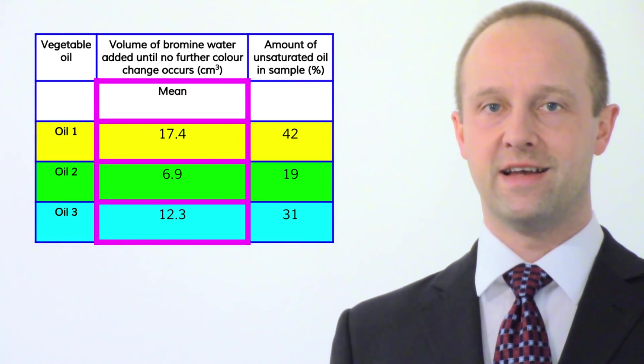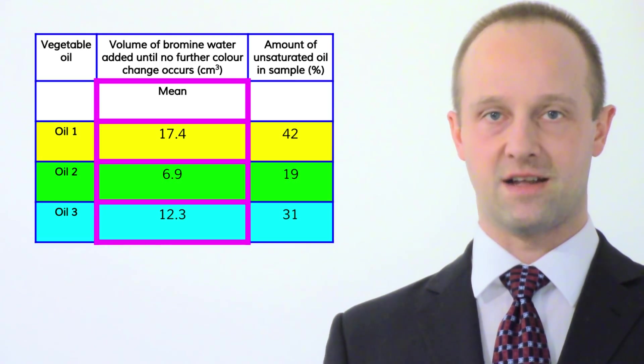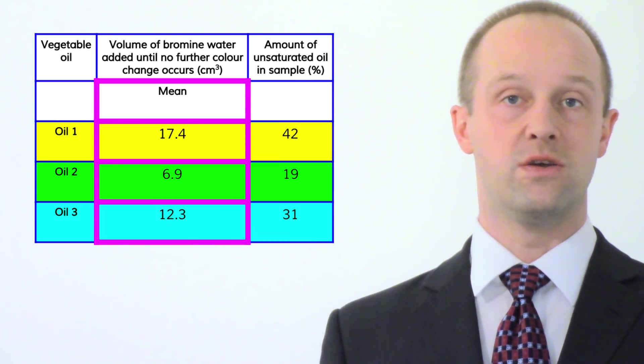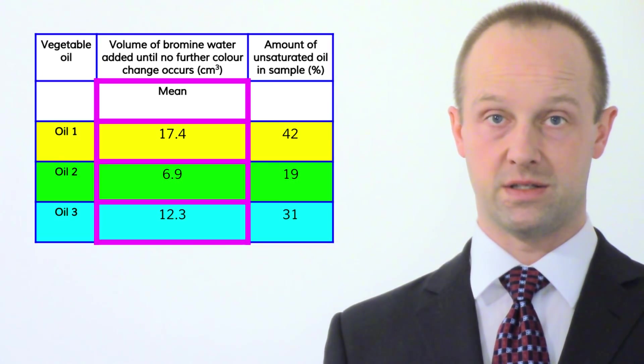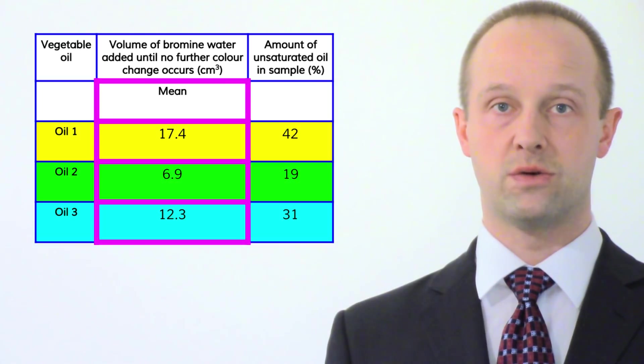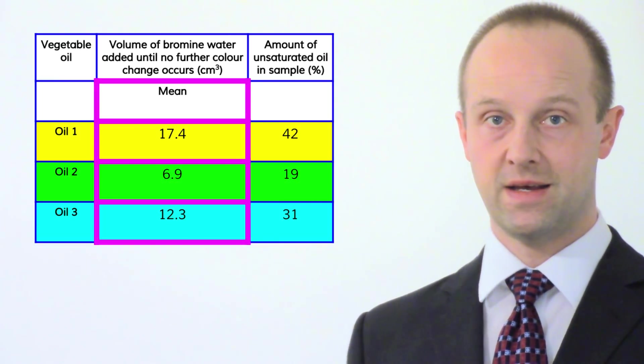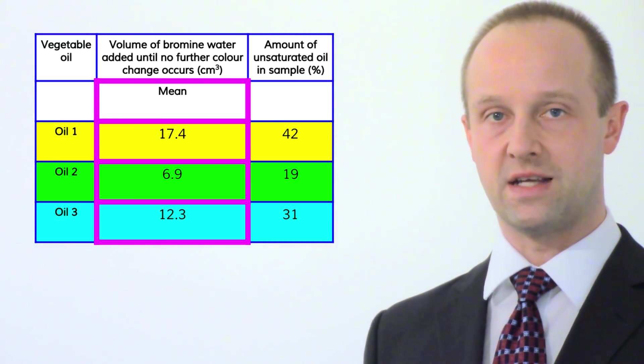That's getting better. It's a lot simpler all of a sudden and again this is likely to be the situation with any tables which you see. If you've got means in there you can ignore the rest of the raw data unless they've asked you to look for anomalies. If they haven't asked you to look for anomalies then just focus on those means. They've already calculated the answers for you.